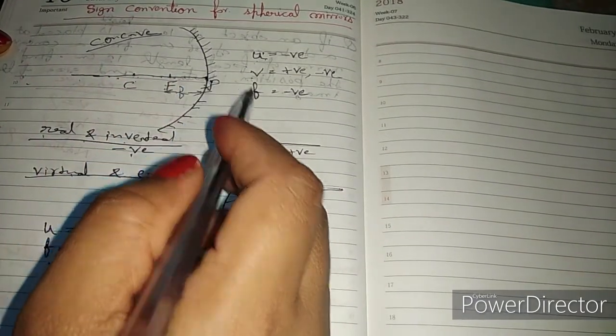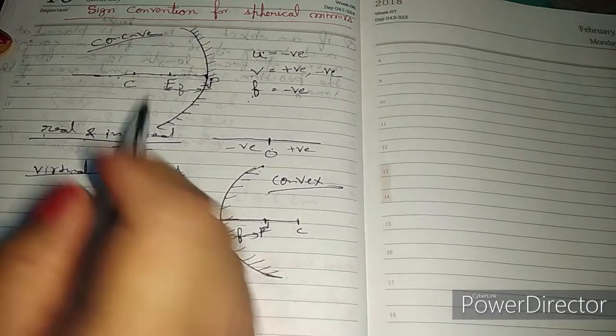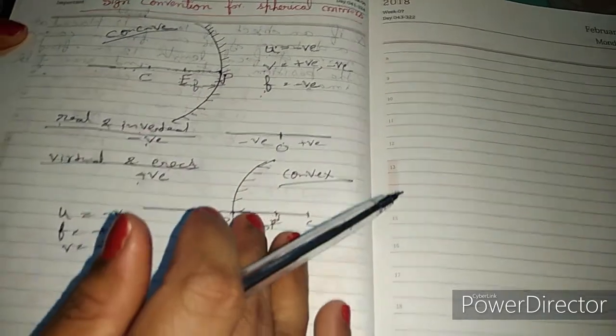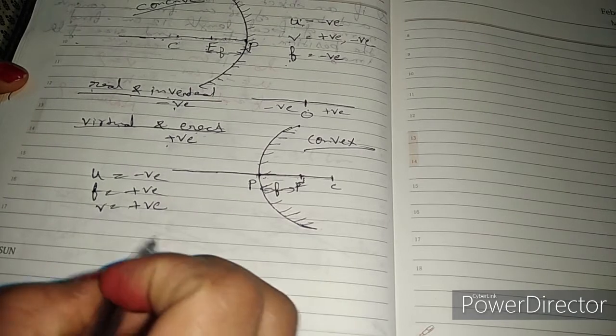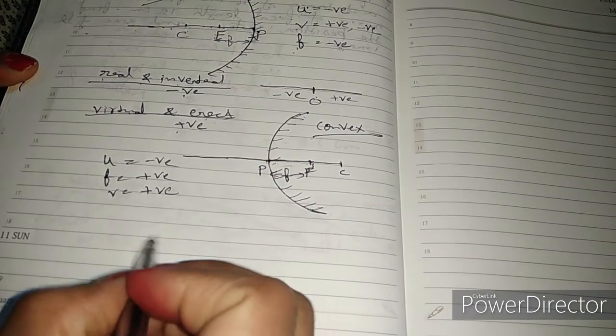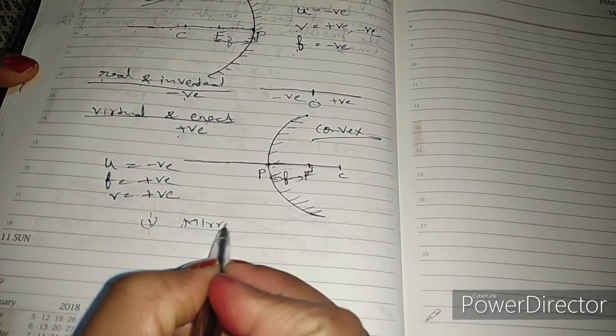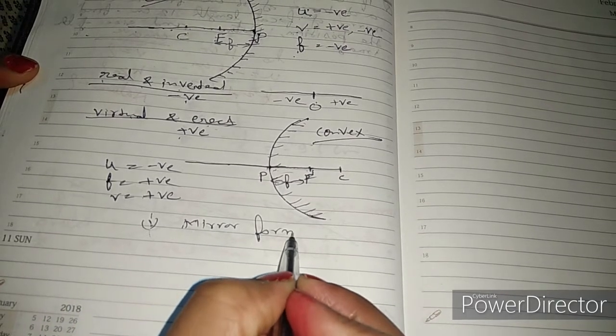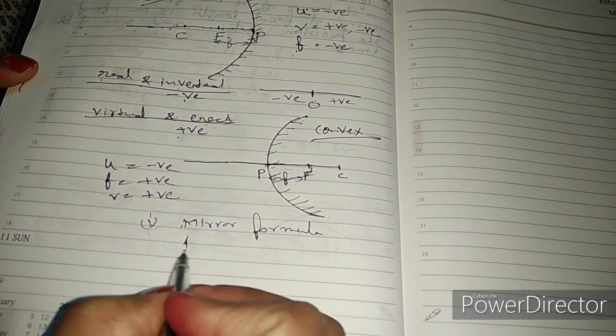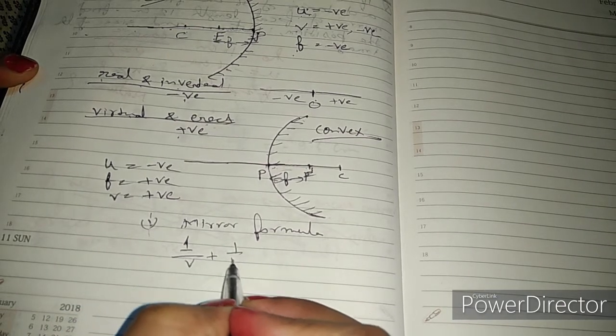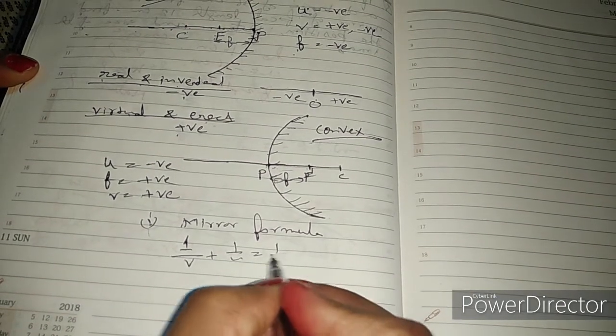Now numerical solve formula, which is mirror formula: 1 by V plus 1 by U is equal to 1 by F. V is image distance, U is object distance, and F is focal length.